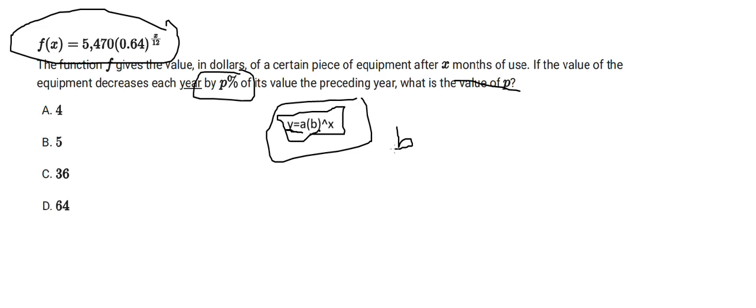b becomes 1 plus a percentage when the value of the function, or when the exponential function is increasing by a certain percentage a%.